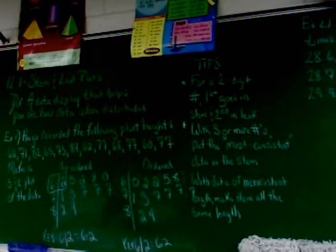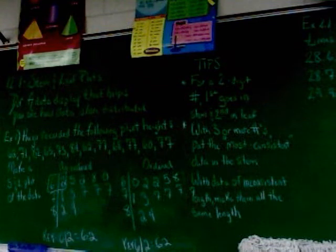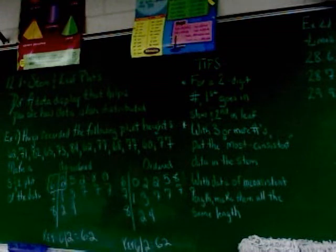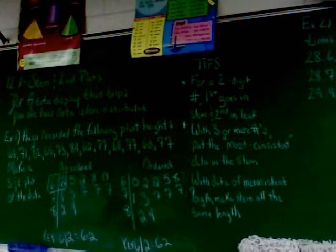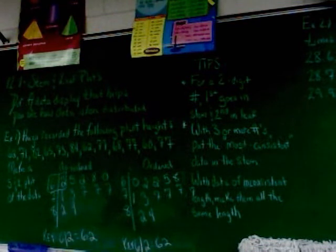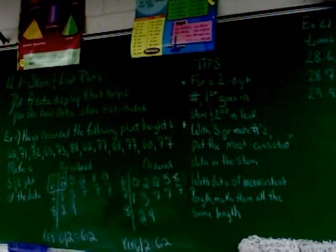Now, you've made the unordered and the ordered stem and leaf plot. Now, unless the book says which one to make, and I know it does at some points, but in other points, it doesn't. Unless it says which one to make, I don't care. Obviously, it's easier to make the unordered because then you can go right through the number list as they show up and fill them in. But, if it says, you've got to do what it says. Otherwise, most of you are probably going to make the unordered unless you're a little obsessive compulsive.